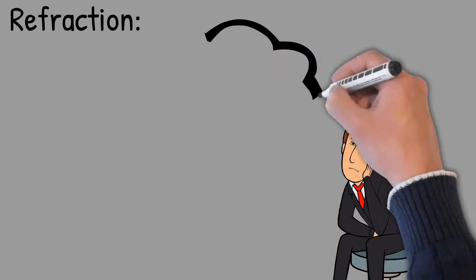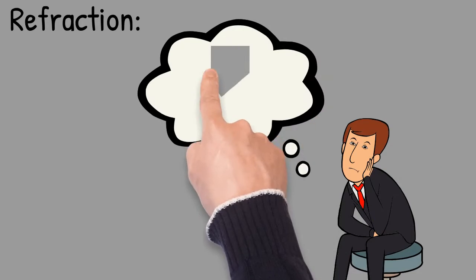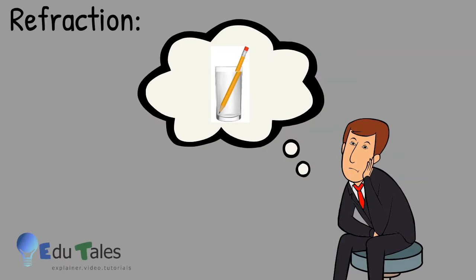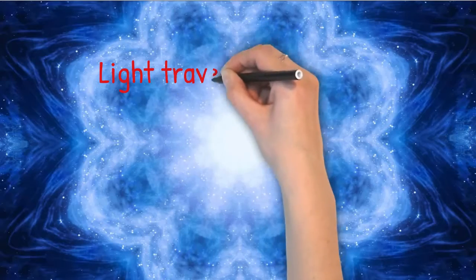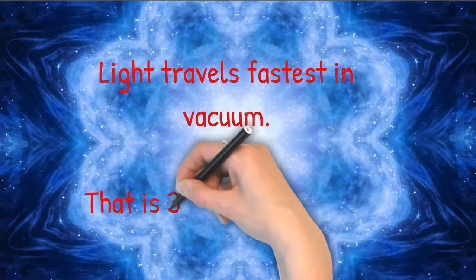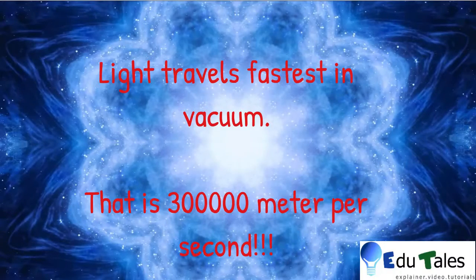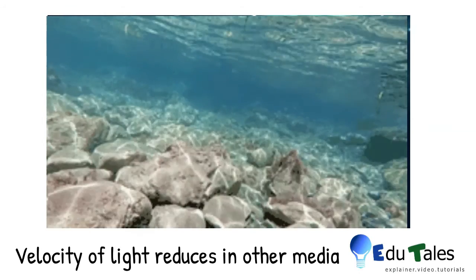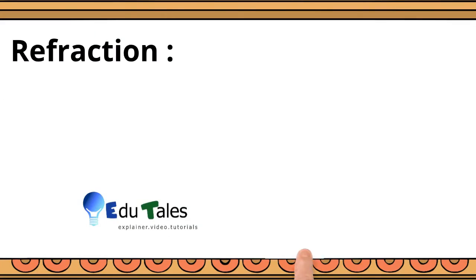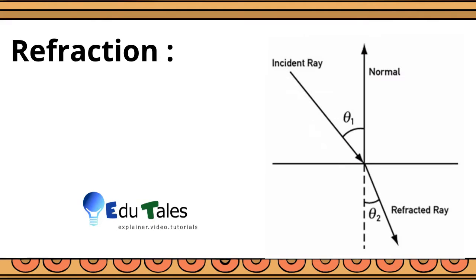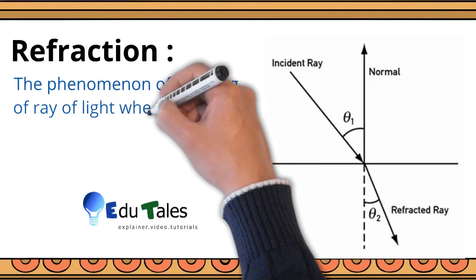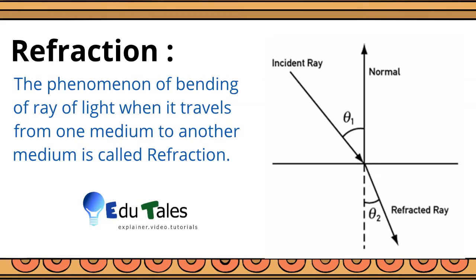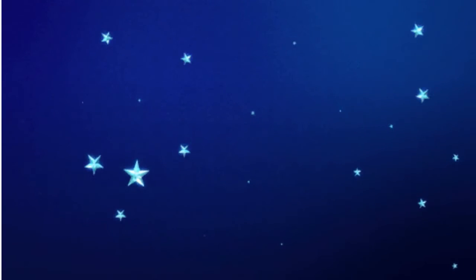Refraction: Have you ever noticed why your pencil appears to be broken when you immersed it in a glass of water? Let us now study why it happens. Light travels faster in vacuum, that is 300,000 meters per second, but its velocity decreases in media other than vacuum. So while passing from one medium to another, the speed of light changes and this change in speed causes the bending of light. This phenomenon of bending of light is called refraction. The twinkling of the star is due to atmospheric refraction.